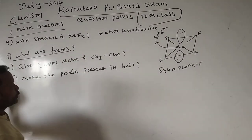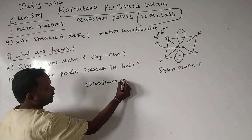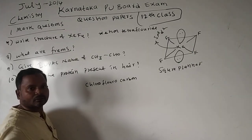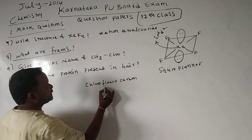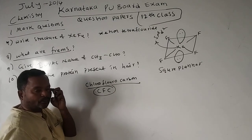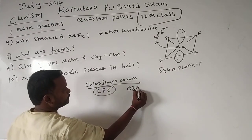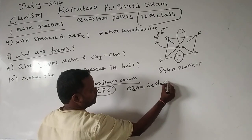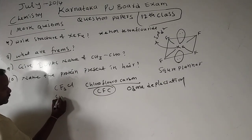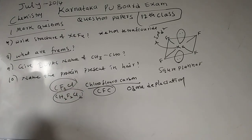Eighth question: what are Freons? Chlorofluorocarbons (CFCs) of methane or ethane are called Freons. These are important compounds that directly interact with the ozone layer and cause ozone depletion. For example, C2F2Cl2 — these are chlorofluorocarbons.